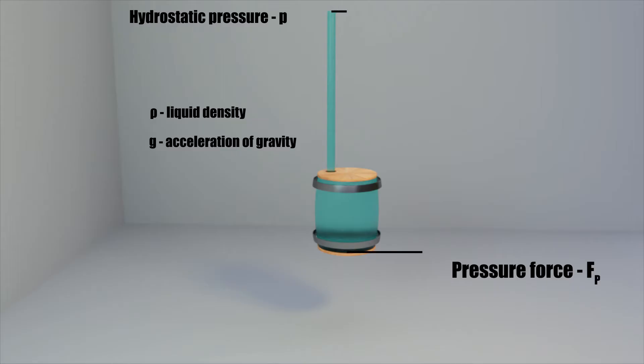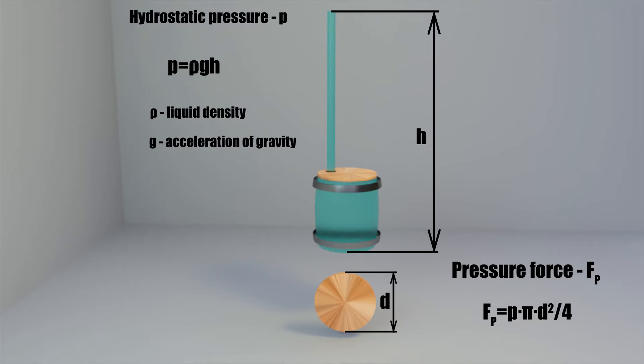If we consider a barrel with a tube, the hydrostatic pressure will be defined as the product of the height of the liquid column by the density of the liquid and the acceleration of gravity. To find the force with which the liquid will press on the bottom of the barrel, you need to multiply the resulting value by the area of the bottom of the barrel.